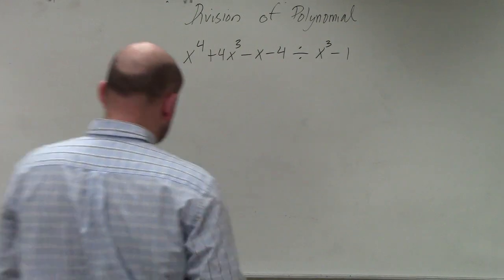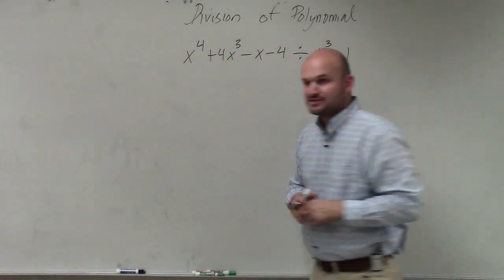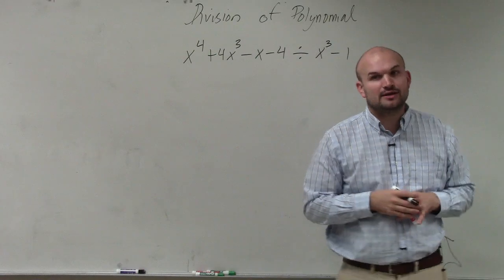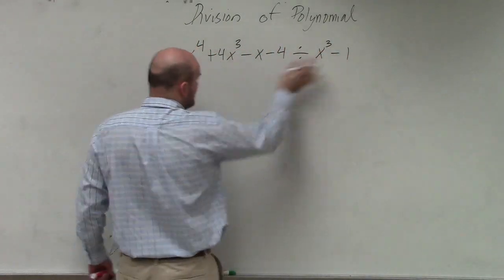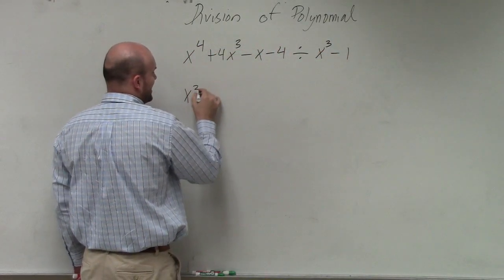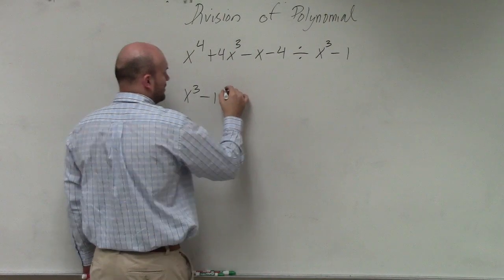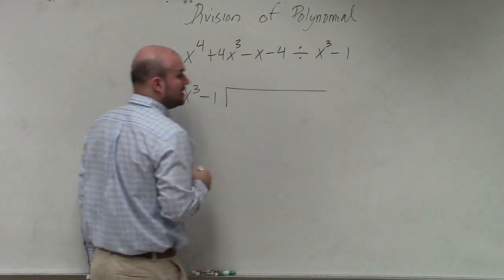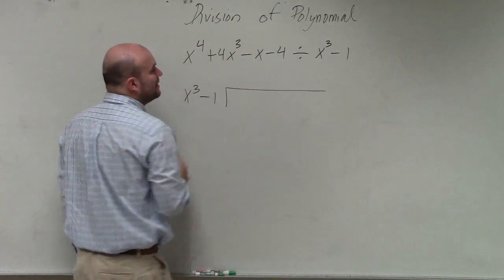In this example, just like we did with the numbers, you're going to write this as a long division problem. So this is our divisor, we write that on the outside: x cubed minus 1. Then under our little square thing, we're going to write our quotient.